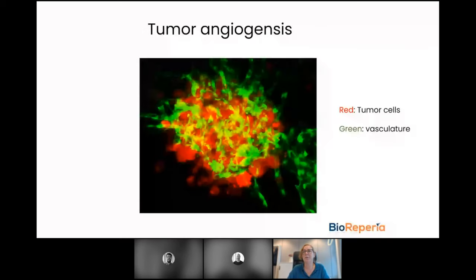During the formation of the microtumor, the tumor cells will recruit host blood vessels to the microtumor. In only three days, we can see a lot of angiogenesis surrounding and into the primary tumor site.